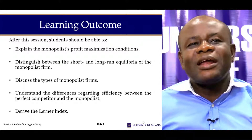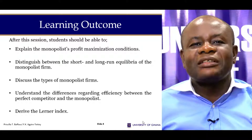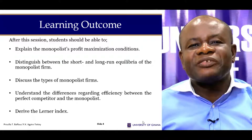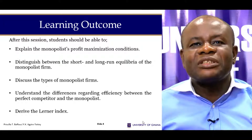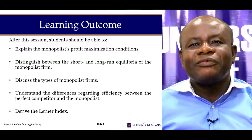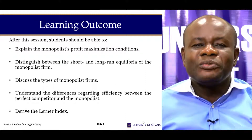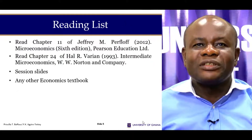By the end of this session, you should be able to derive the Lerner index. You should also be able to distinguish between the efficiency level in the perfectly competitive market and that of the monopolies. You should be able to discuss various types of monopolistic firms, and also discuss the short-run and long-run equilibrium of the monopolies.